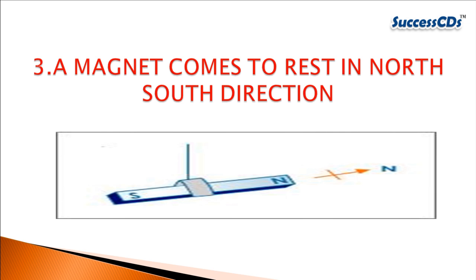A magnet always comes to rest in the north-south direction. Suspend a bar magnet with the help of a thread tied at its center — when it comes to rest, you will find it resting in the north-south direction. The pole pointing towards the north is called the north pole, and the pole pointing towards the south is called the south pole.